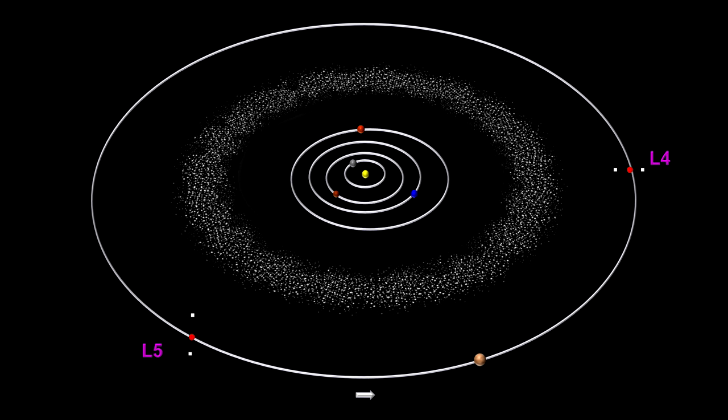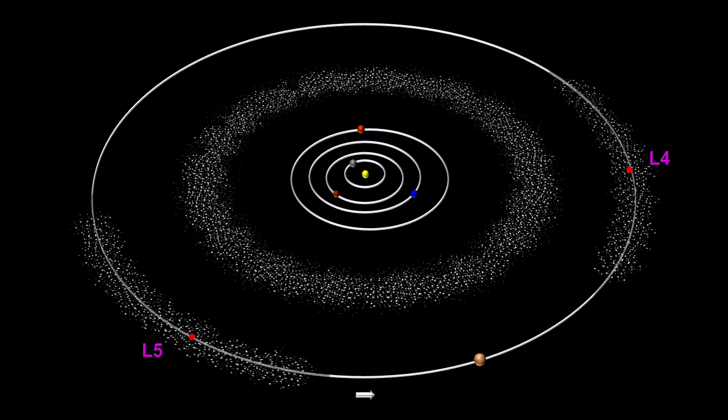Asteroids at Lagrange points are called Trojans. As of May 2017, we know Jupiter has at least 6,515 Trojans. Such objects have also been observed in the orbits of Mars, Neptune, and several moons of Saturn.